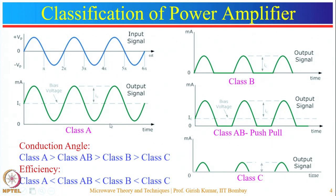In class B amplifiers, the operating point is chosen at the cutoff, so output current flows only for the positive half cycle — the conduction angle is 180 degrees. Half of the information is lost. However, one can obtain the complete waveform by using a special connection of two transistors known as push-pull. We will discuss this configuration later.